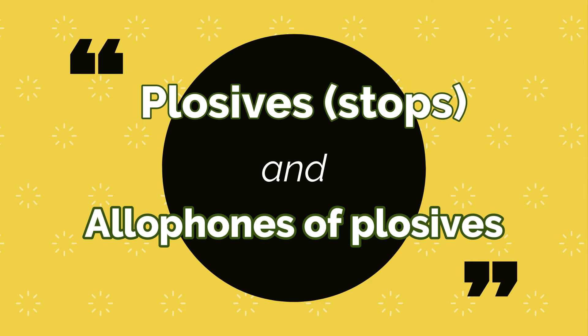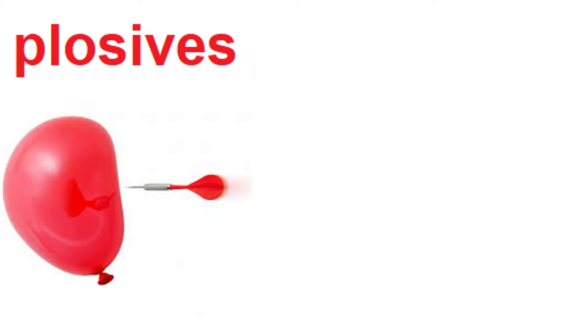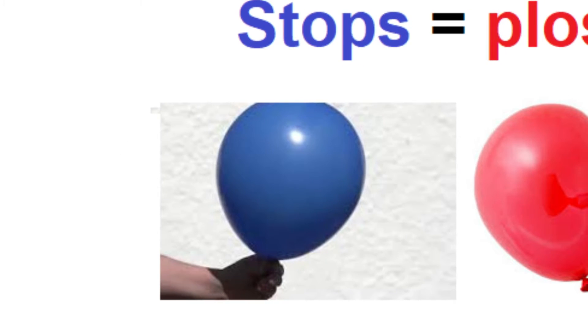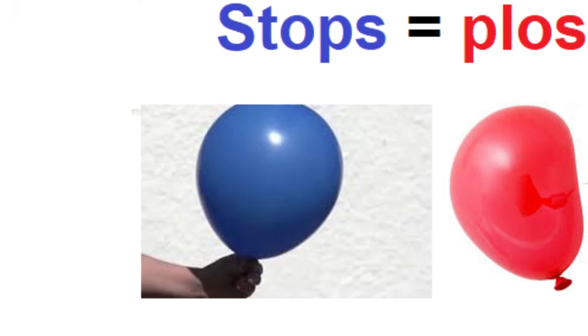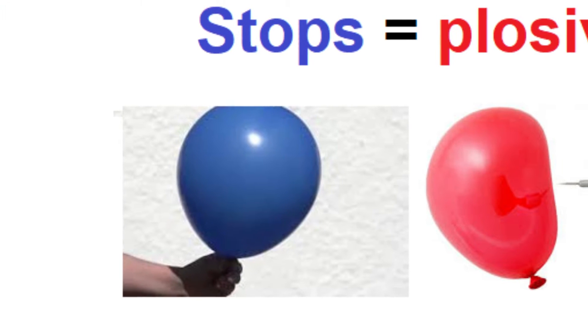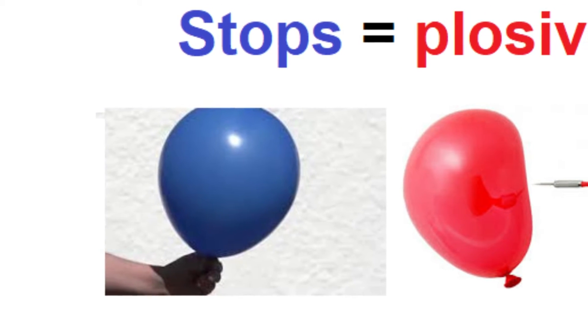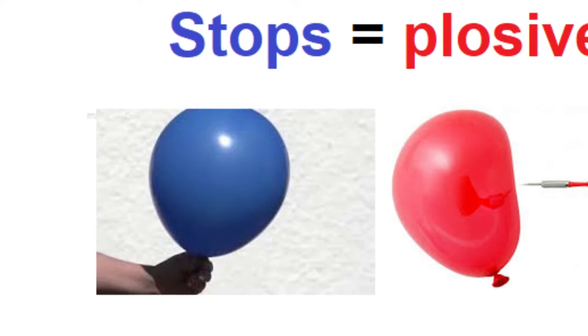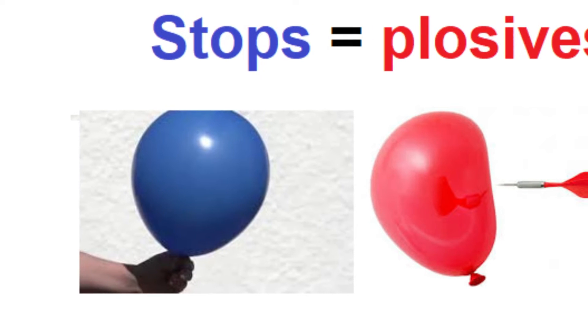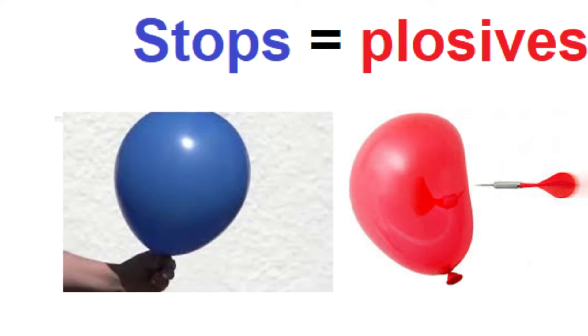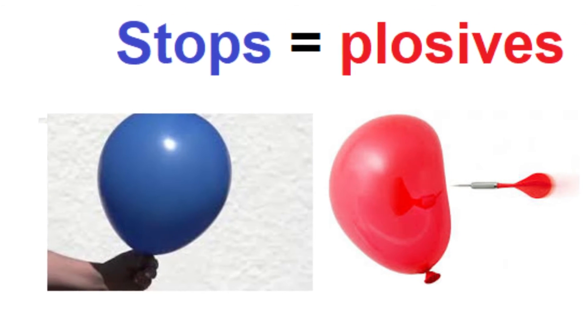Plosives or stops are sounds that are made by popping the air, like popping a balloon. When popping, we exhale breath, and this process is called aspiration. To make the pop, we first need to stop the airstream entirely — this explains why plosives are also called stops. And then we release the air all at once.